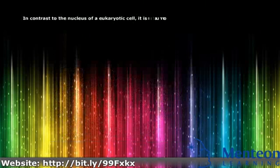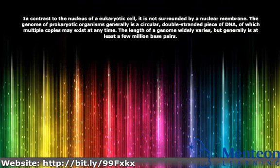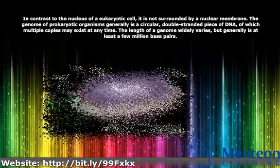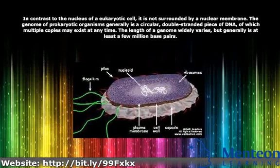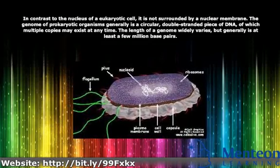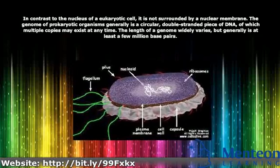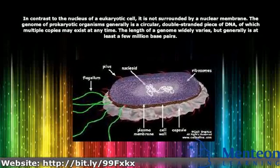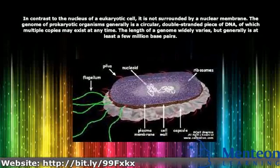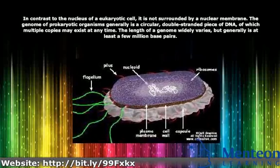In contrast to the nucleus of a eukaryotic cell, it is not surrounded by a nuclear membrane. The genome of prokaryotic organisms generally is a circular, double-stranded piece of DNA, of which multiple copies may exist at any time.